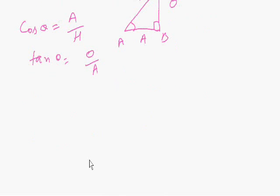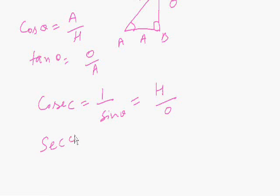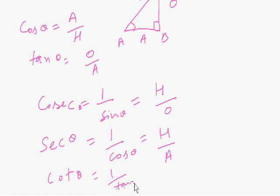Cosec theta is just the reciprocal of sin theta, which is hypotenuse divided by opposite. Sec theta is just the reciprocal of cos theta, one divided by cos theta, which is hypotenuse divided by adjacent. And cot theta is just the reciprocal of tan theta, which is adjacent divided by opposite.